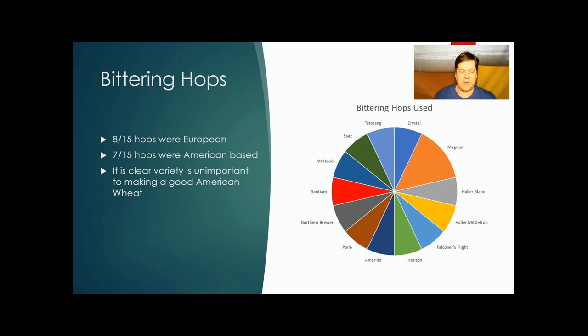Bittering hops were all over the place. Eight of them were European, seven were American. Don't think it really matters.